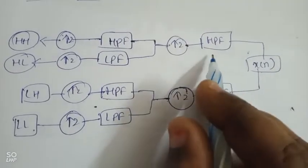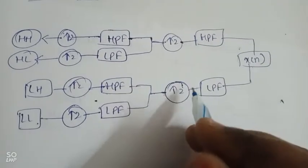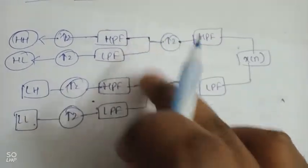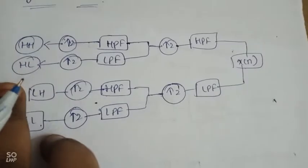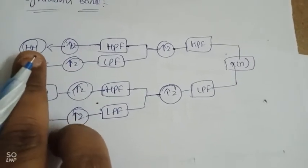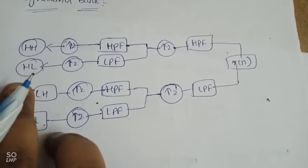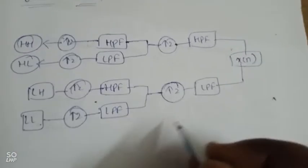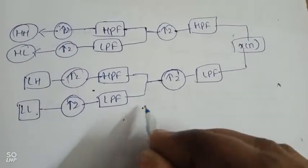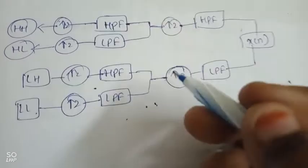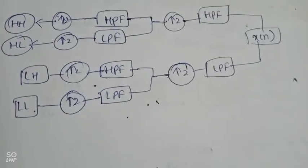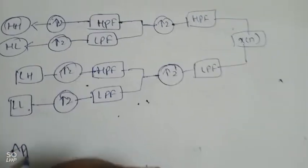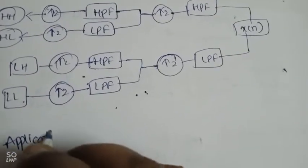In the synthesis bank, x(n) is reconstructed using high pass and low pass filters — h(n) and g(n) — with up-sampling applied. The outputs include high-high, high-low, low-high, and low-low pass filter combinations.